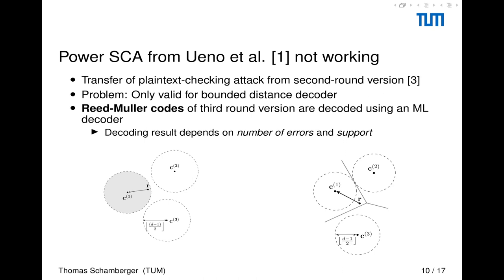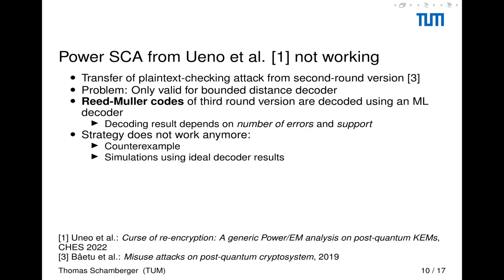Small visualization here on the left-hand side, we have our bounded distance decoder with the distinct decoding spheres. And here we have our ML decoder where we see that the whole space here, that resulting inputs to the decoder and the whole space get decoded to a certain codeword. And this introduces the dependency on the support. We found that the strategy does not work anymore. We show a counterexample in the paper. And we also simulated the attack with ideal decoder results of the reference implementation. And we came to the conclusion that the strategy does not work.